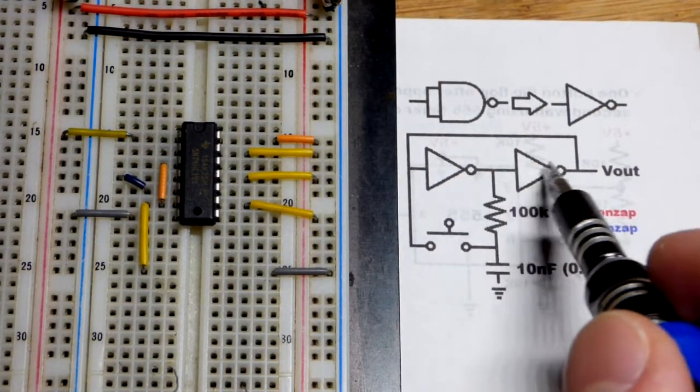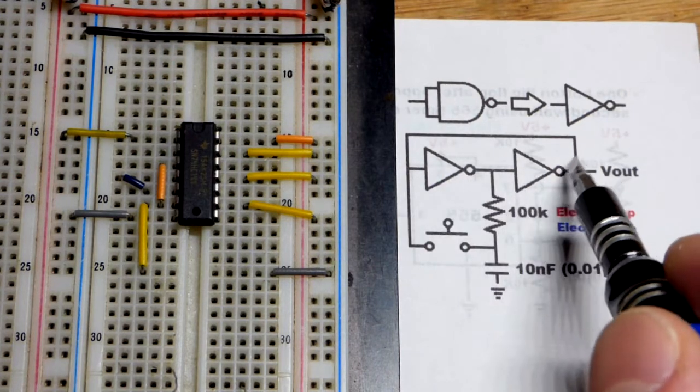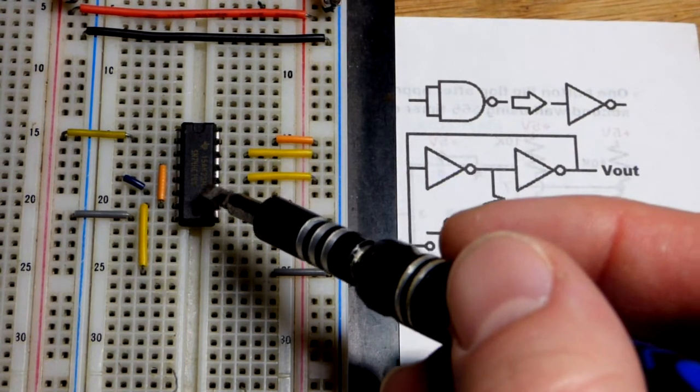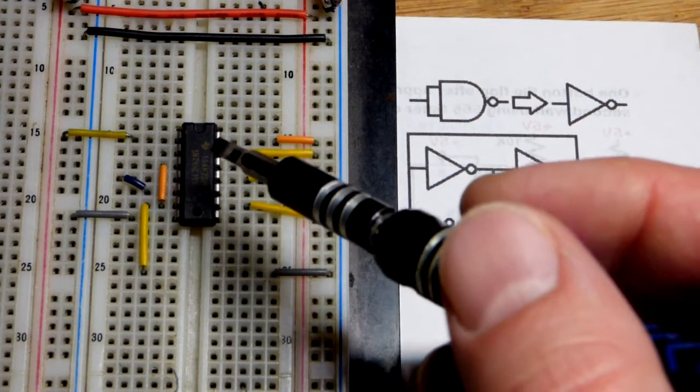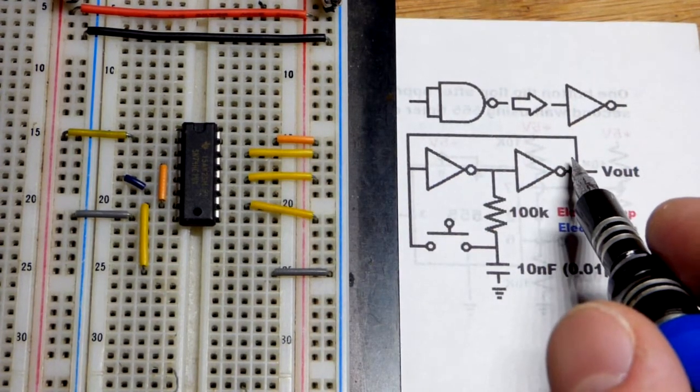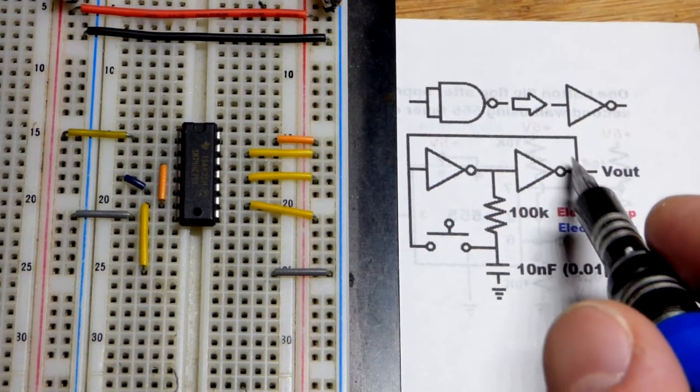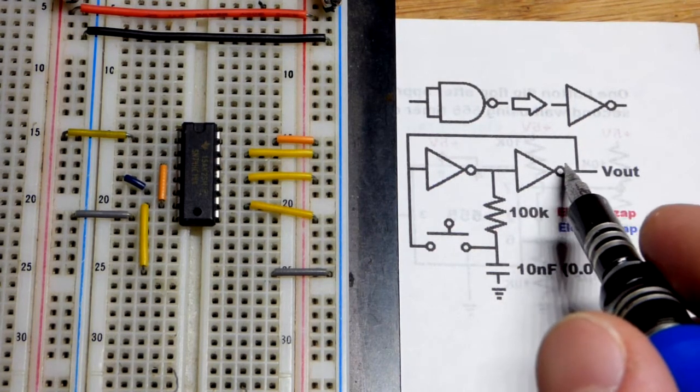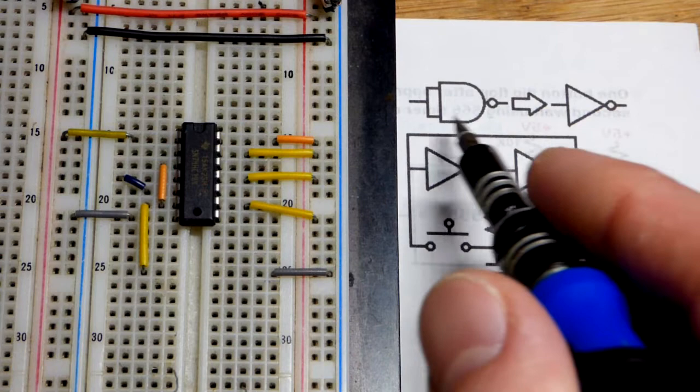The main part of the circuit are these two NOT gates in series. This is the 74HC14 integrated circuit - it has six NOT gates in it, we're using two of them. The NOT gate has an opposite output of what the input is. So if we have high in, that'll be low out, and then low out with low in means high out.